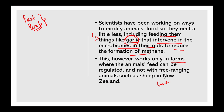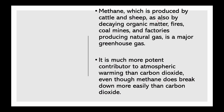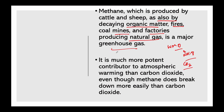That is why scientists want to treat this at the genetic level. Methane is produced by cattle and sheep, as well as by decaying organic matter, fires, coal mines, factories, and natural gas production. Methane is a major greenhouse gas — a very potent contributor to atmospheric warming, even more so than carbon dioxide, though methane does break down more easily than CO2. A report by the World Meteorological Organization noted that atmospheric concentrations of greenhouse gases reached a new record in 2018.